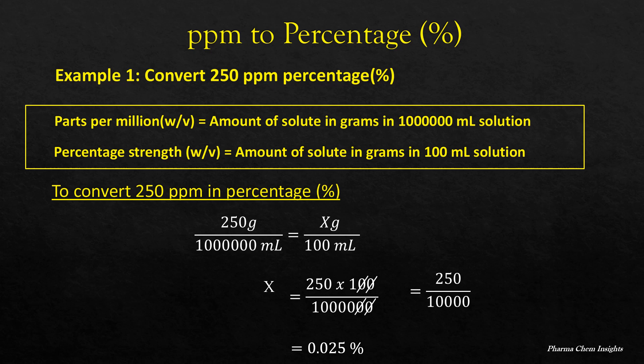You don't need to do all this calculation to convert PPM to percentage. Just divide that PPM by 10,000. So in this case, to convert 250 PPM into percentage, just divide 250 PPM by 10,000 and you will get the answer.